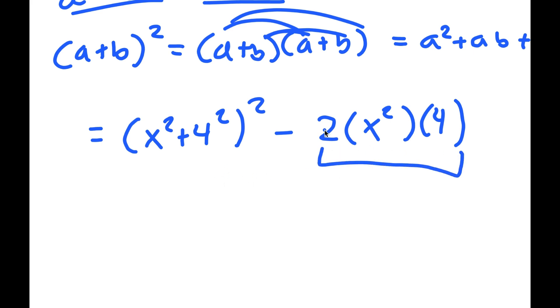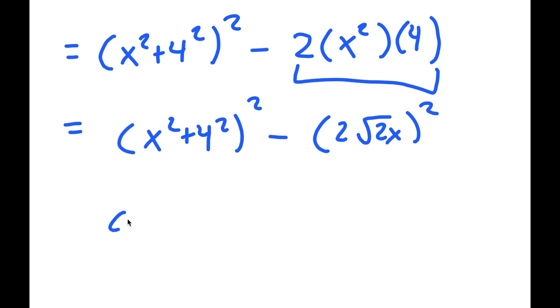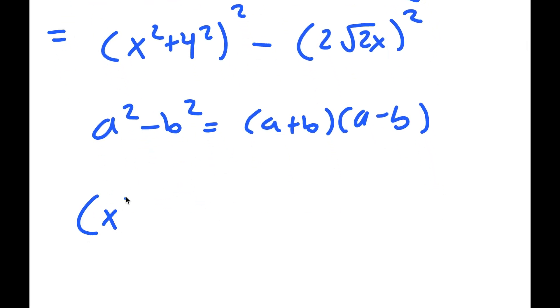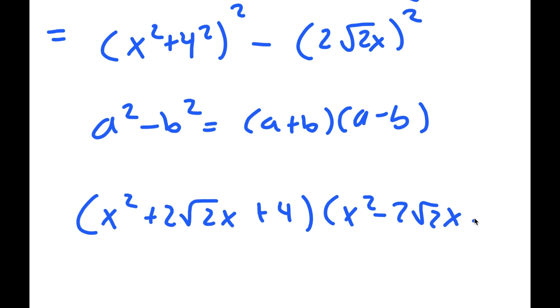And this is the same thing as 2 root 2x squared. If I have something in the form a squared minus b squared, this equals a plus b times a minus b. So this turns into x squared plus 2 root 2x plus 4, times x squared minus 2 root 2x plus 4.